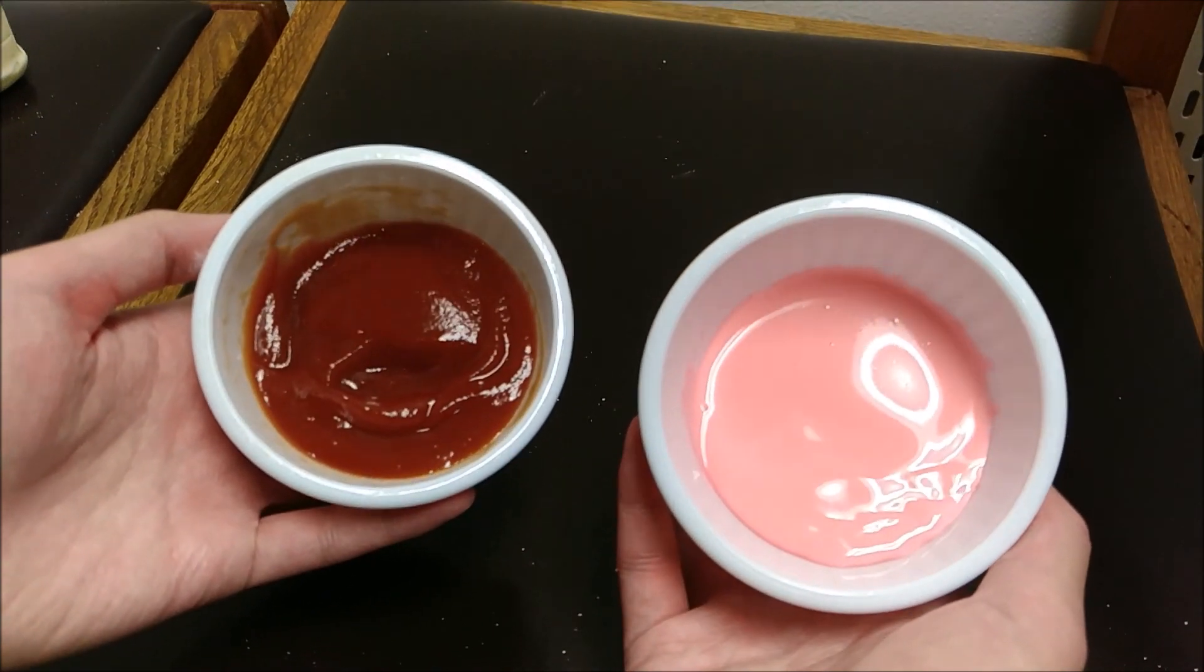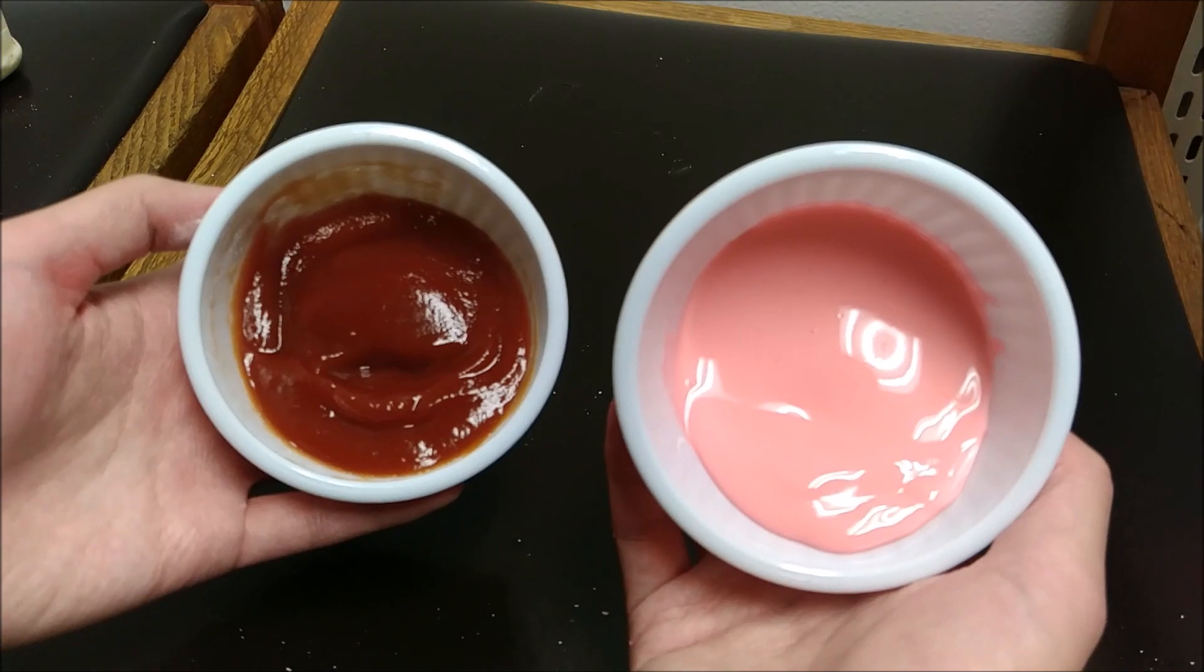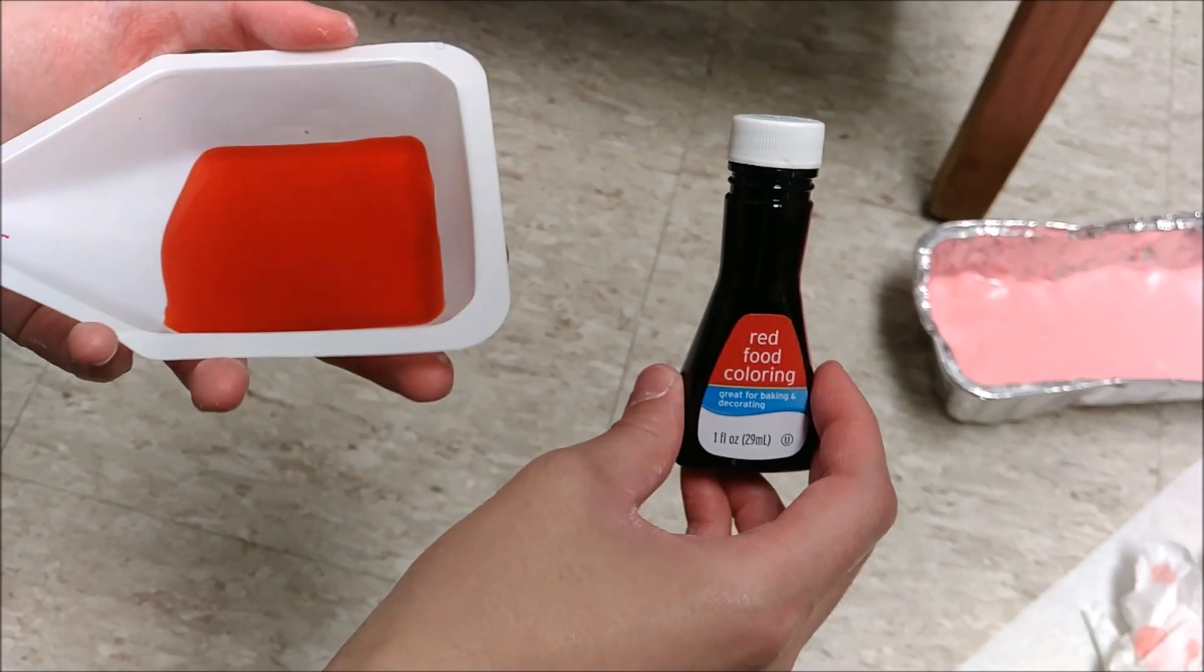Here we have ketchup and cornstarch with water, but why do their motions act differently? And here we have some water with food coloring which has even more motion than the two previous fluids.